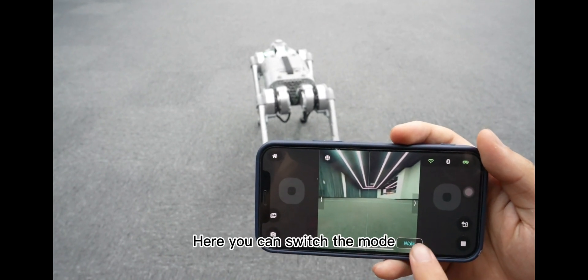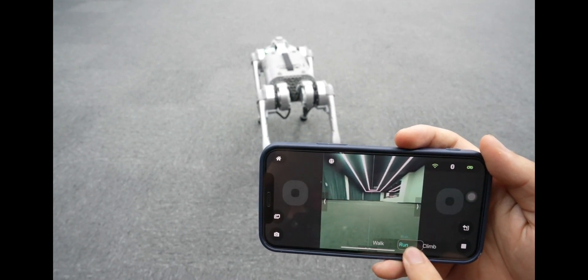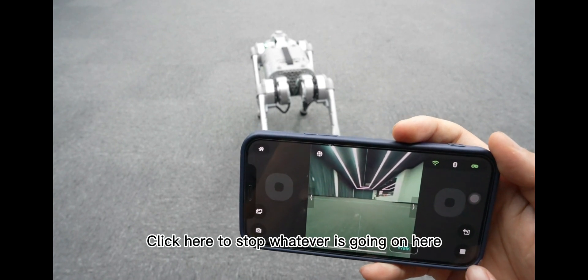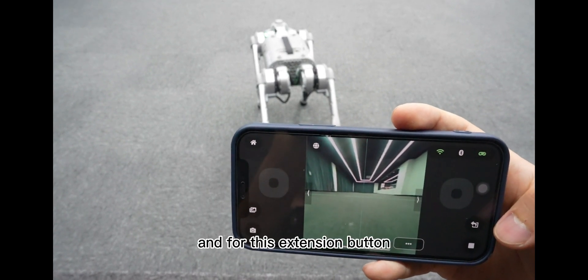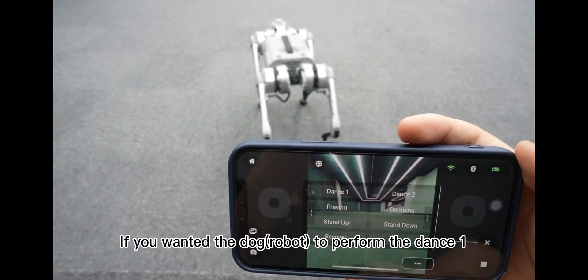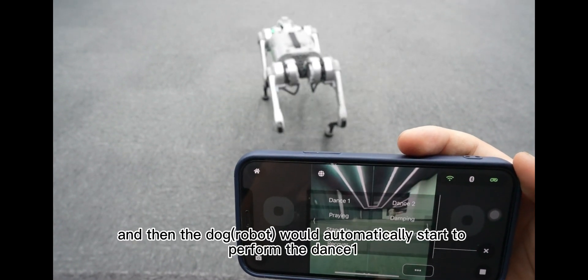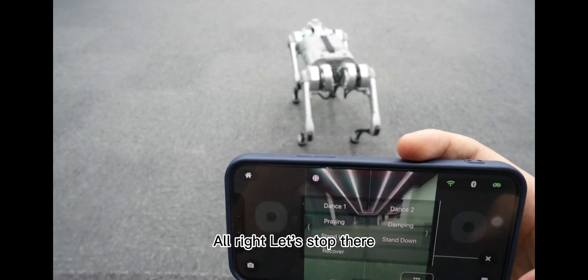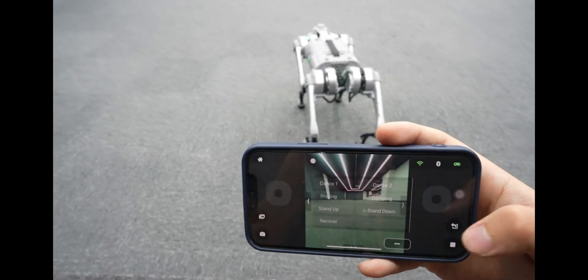And here you can switch the mode from the walking to running to climbing. And you can click here to stop whatever is going on here. And for this extension button, if you click it, you can see there's a box coming up. And if you want the dog to perform the dance one, just click it and then the dog will automatically start to perform the dance one. Let's stop there. Click the stop button.